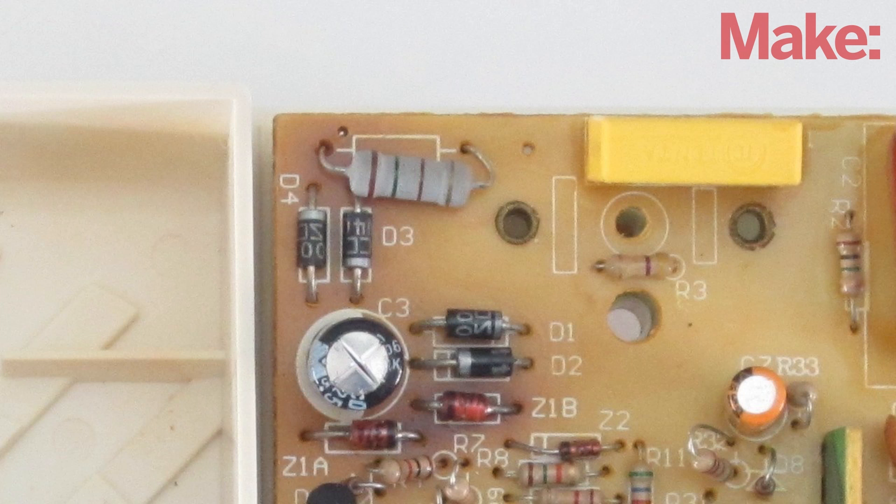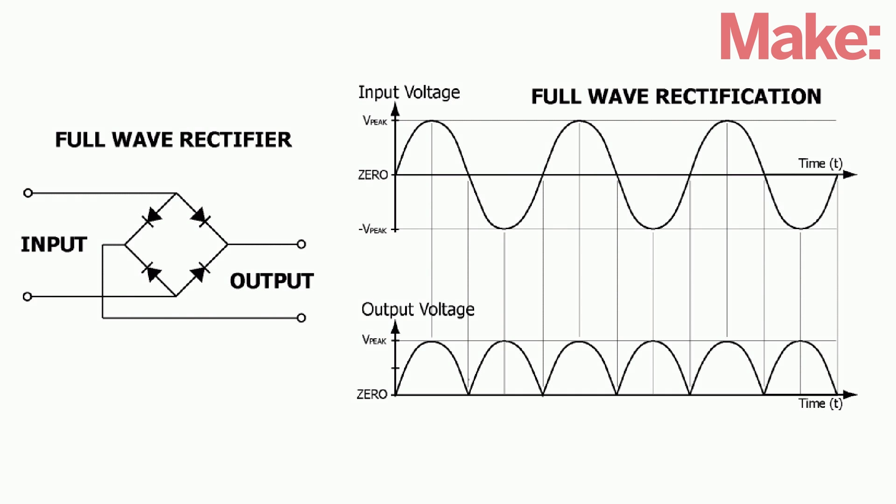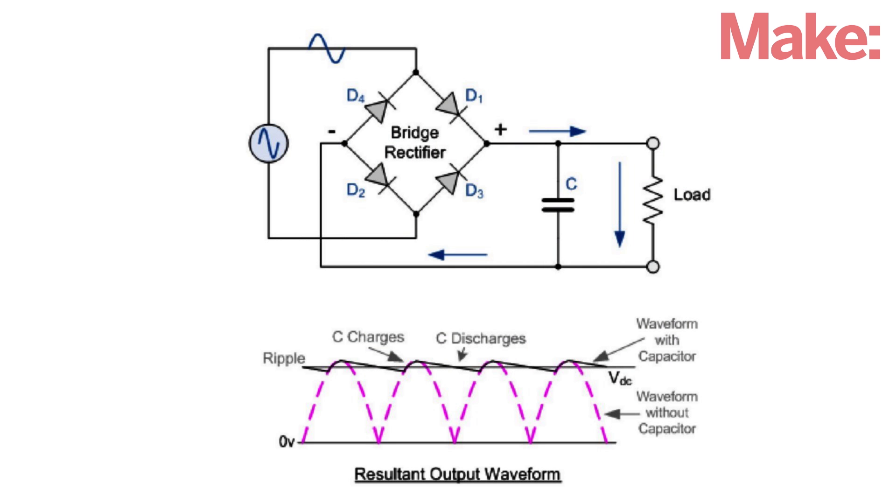Immediately next to the AC plug will be an AC to DC converter. This will typically have a square bridge rectifier made of four diodes that converts the AC sine wave into a series of DC pulses. Then a capacitor smooths out the pulses into a more constant DC signal that can power the circuit.